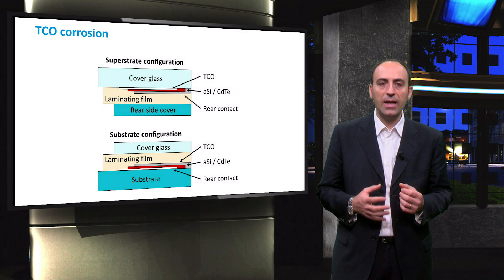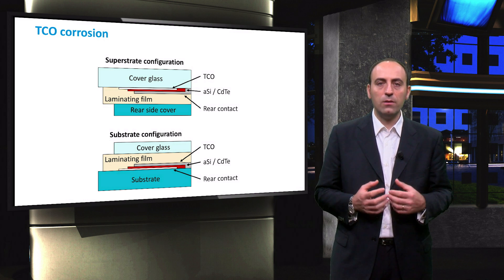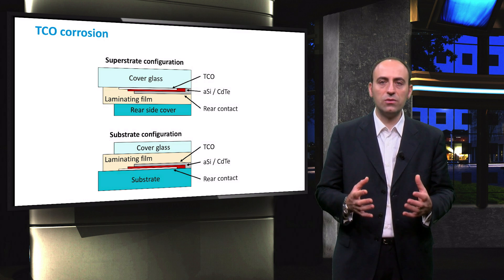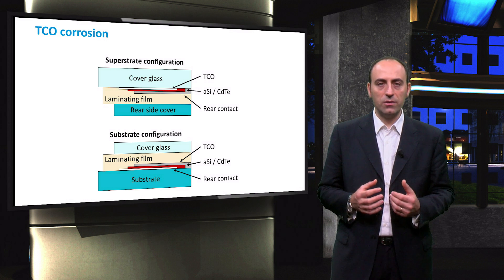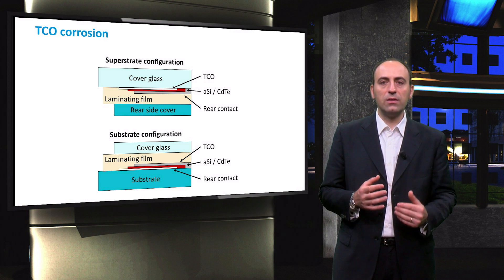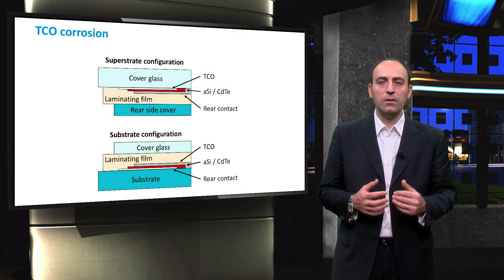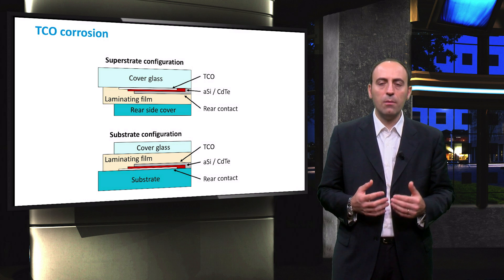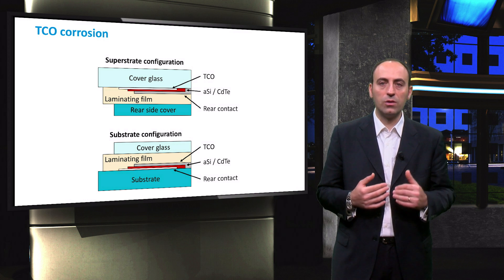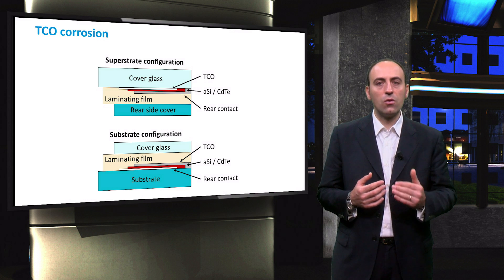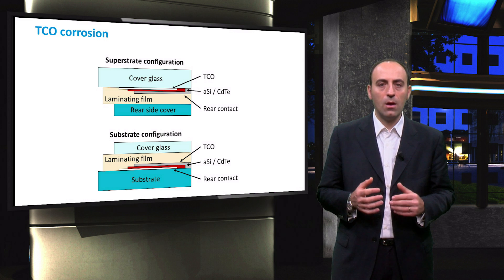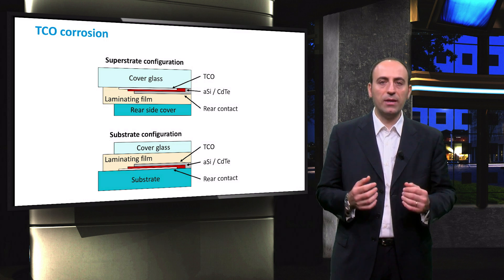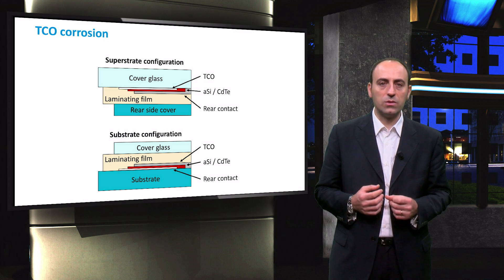The difference is in which order the different layers are structured during the production process. In the superstrate design, the TCO is in direct contact with the glass. This means that this design is the most affected by TCO corrosion because the sodium that is contained in moisture on the cover glass enhances the corrosion of the TCO. When this electrically conductive layer is damaged, it cannot be repaired and this results in substantial power losses.